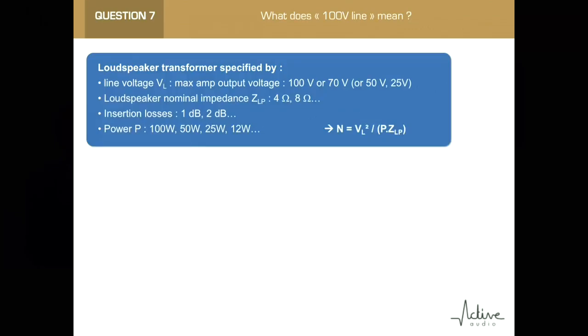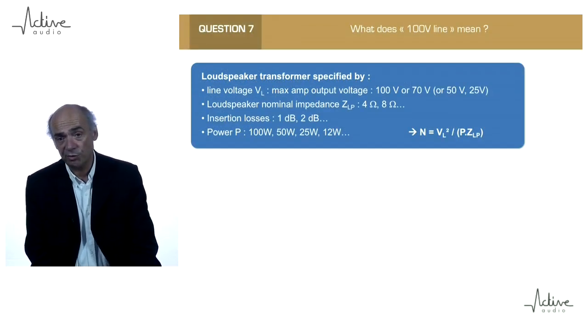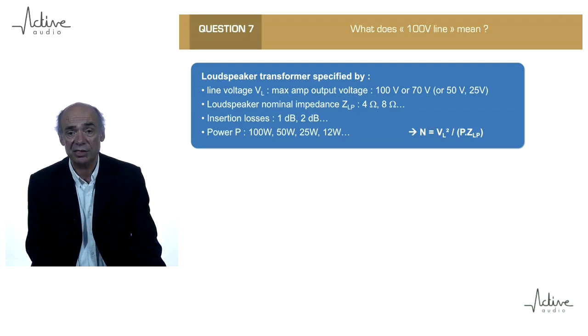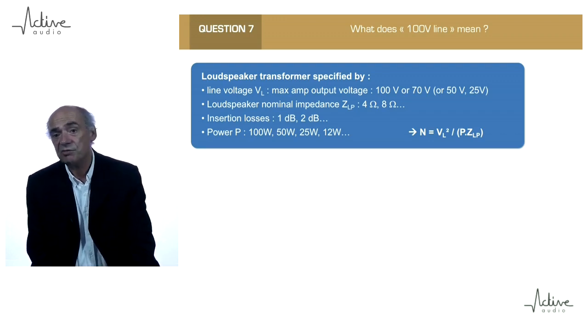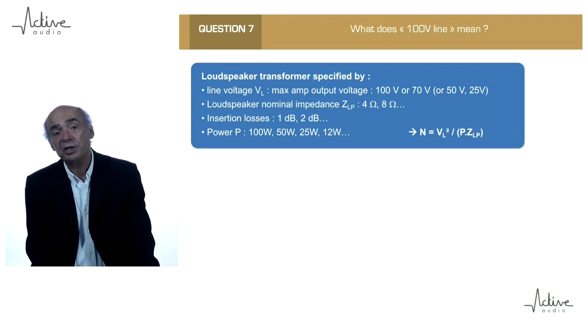The loudspeaker transformers are specified by the line voltage, so most of the time 100V, in the States it might be 70V, sometimes even 50V or even 25V. The loudspeaker nominal impedance, usually 4 or 8 ohm, for example.